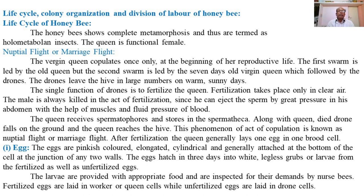Hello students. Last time we explained about the nesting behavior of all four species of honeybees: Apis dorsata, Apis serena indica, Apis mellifera, and Apis florea. Today we are going to explain the life cycle of the honeybees.